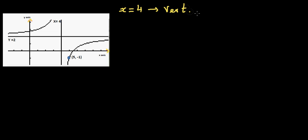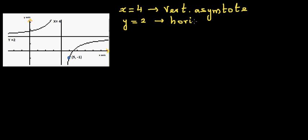Let's write the equation of this rectangular hyperbola. We can see the y-axis and x-axis. The vertical asymptote is x = 4, and the horizontal asymptote is y = 2. These two are very vital pieces of information when writing the equation of a hyperbola.